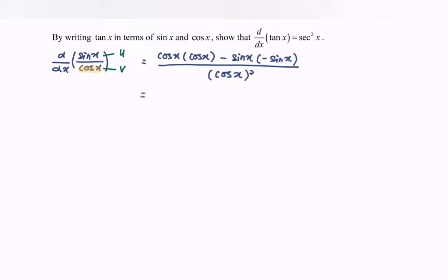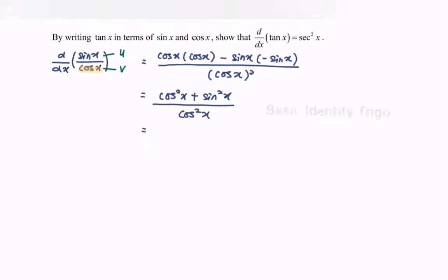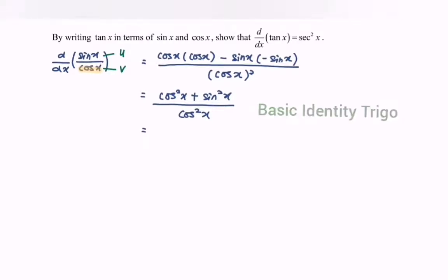Simplifying, we will have cos²x plus sin²x over cos²x. By referring to the basic trigonometric identity, cos²x plus sin²x equals 1, so simplifying gives us 1 over cos²x.